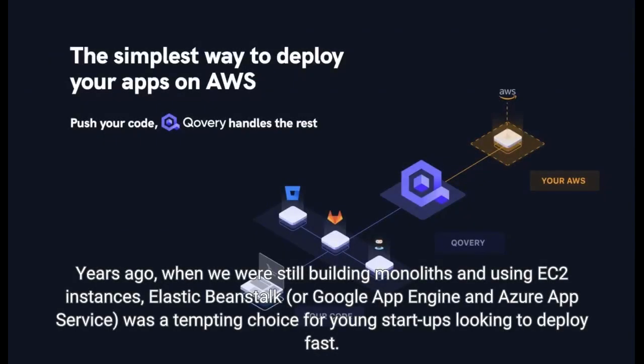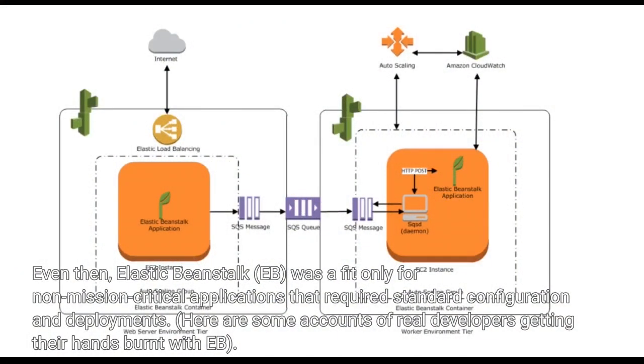Years ago, when we were still building monoliths and using EC2 instances, Elastic Beanstalk, or Google App Engine and Azure App Service, was a tempting choice for young startups looking to deploy fast. Even then, Elastic Beanstalk was a fit only for non-mission critical applications that required standard configuration and deployments.